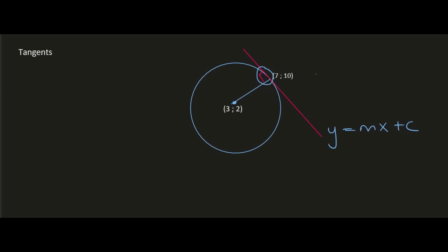What we can do is work out the gradient of the radius using the gradient formula: (y₂ - y₁) / (x₂ - x₁). That gives us (10 - 2) / (7 - 3), which gives us 4.